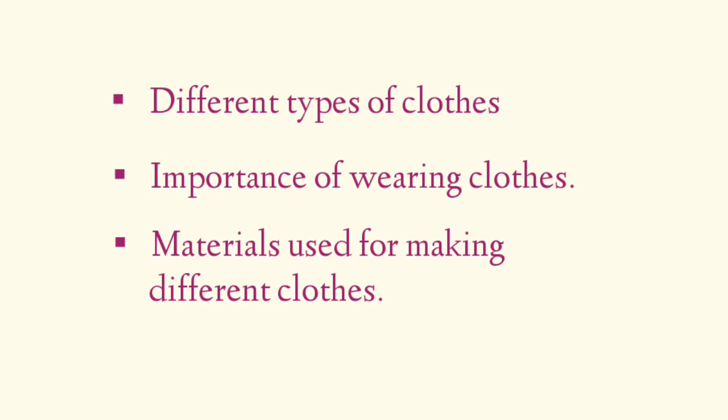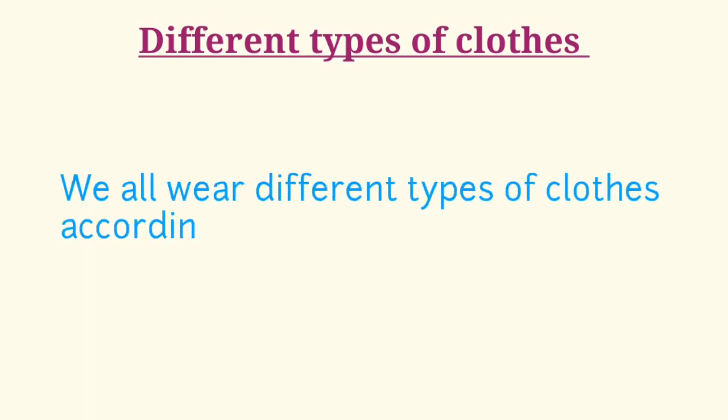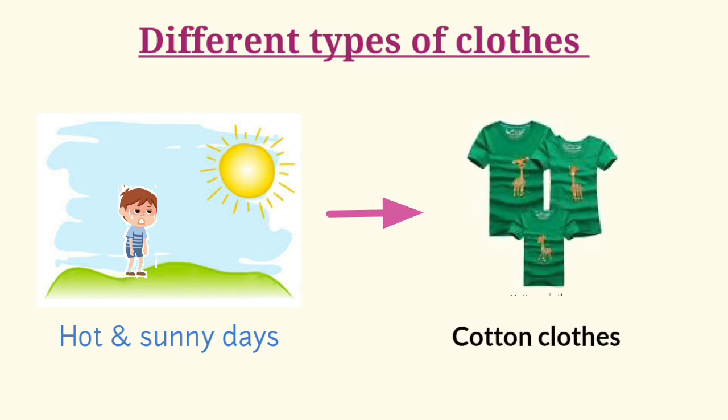Children, let's start with different types of clothes we wear. We all wear different types of clothes according to weather. For example, on hot and sunny days, we prefer to wear cotton clothes, because it keeps our body cool and they absorb our sweat which comes out from our body.